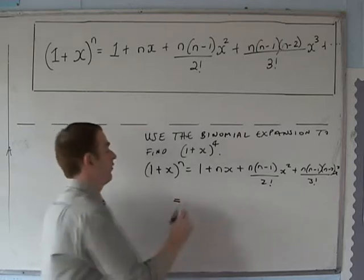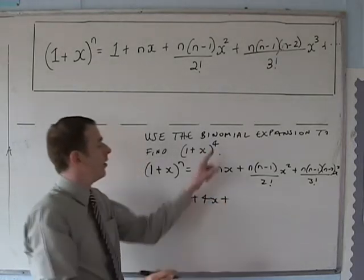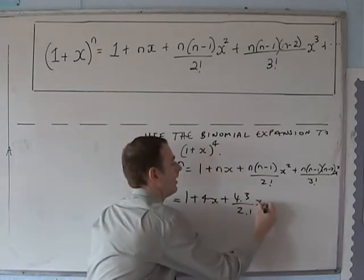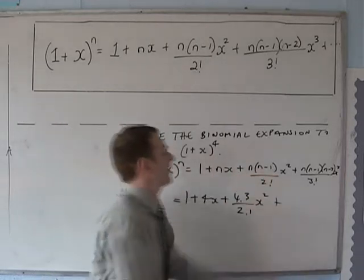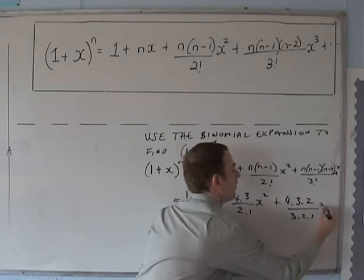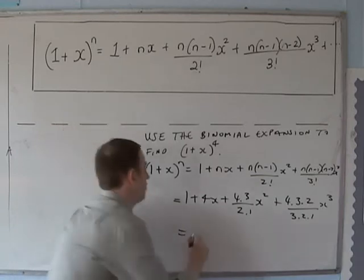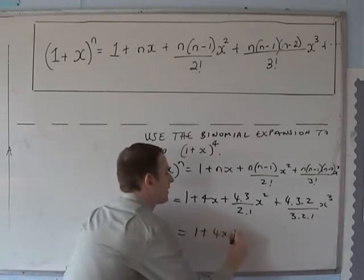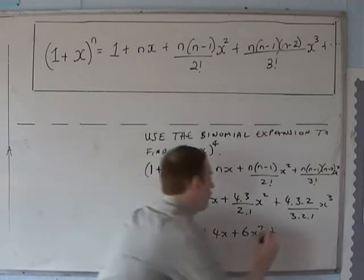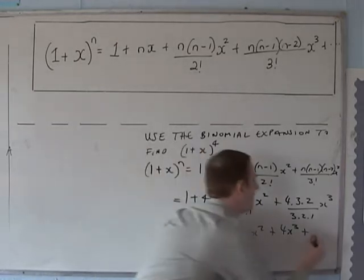That is all equal to 1 — n is 4 — plus 4x, plus 4 times 3 divided by 2 times 1 times x squared, plus 4 times 3 times 2 times 1 times x cubed, which gives 1 plus 4x plus 6x squared plus 4x cubed plus x to the power of 4.